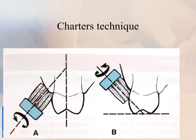The Charters method requires placement of a soft or medium multi-tufted brush on the teeth with the bristles pointed towards the crown at a 45-degree angle to the long axis of the teeth. The sides of the bristles should be flexed against the gingiva and a back-and-forth vibratory motion used. This technique was designed to gently massage the gingiva, so the bristle tip should not drag across it. Short back-and-forth strokes are used on the occlusal surfaces. This technique can be recommended for cleaning in areas of healing wounds after periodontal surgery.